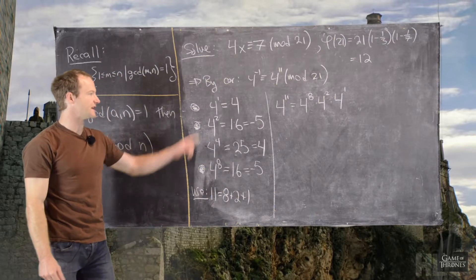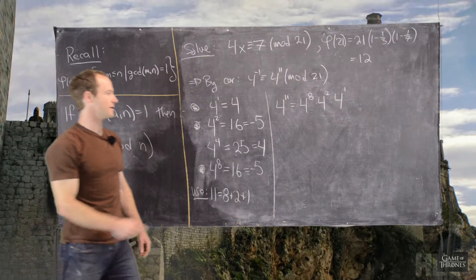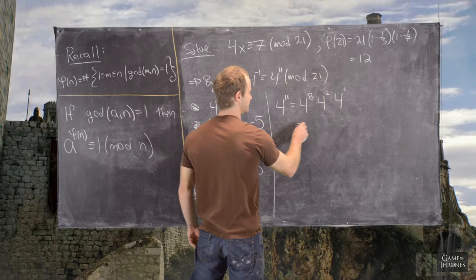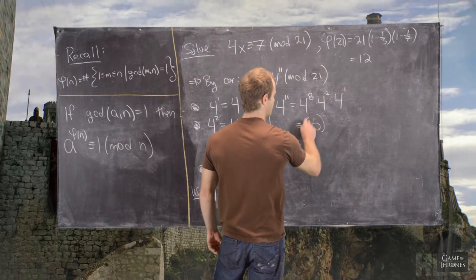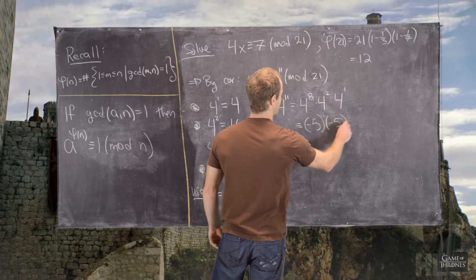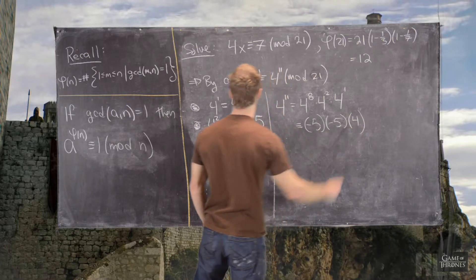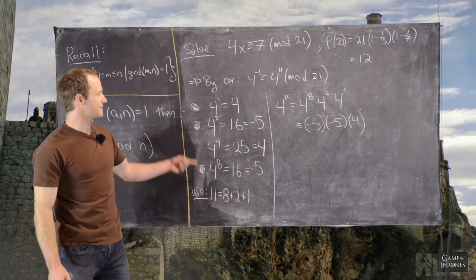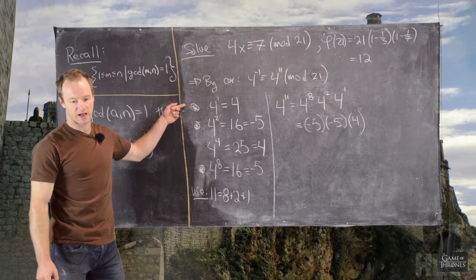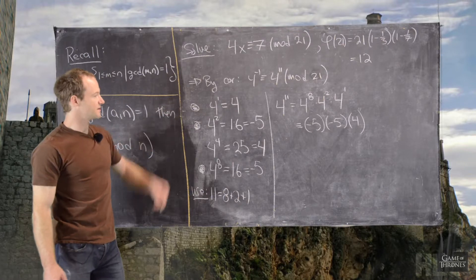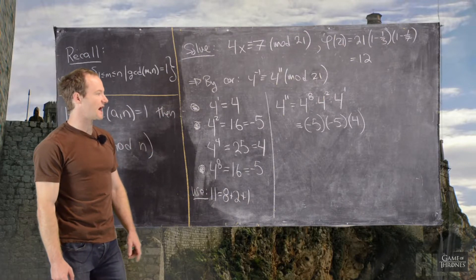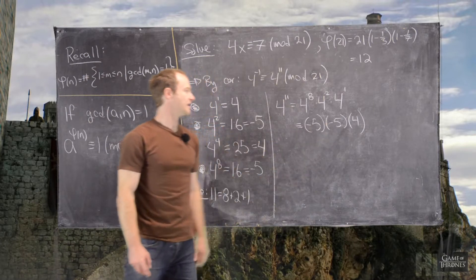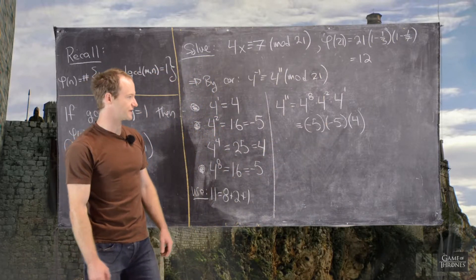And we know each of these mod 21. So, this is congruent to negative 5 times negative 5 times 4. So, we have negative 5, negative 5, and 4. Great. So, now we know negative 5 times negative 5 is 25, which is 4.